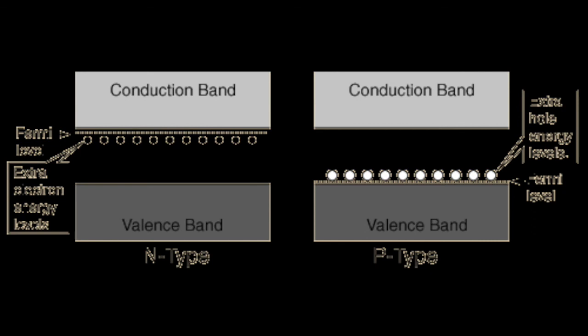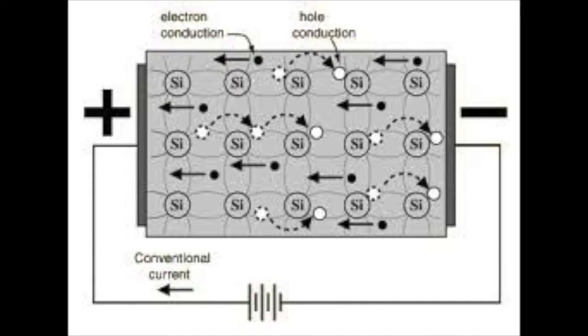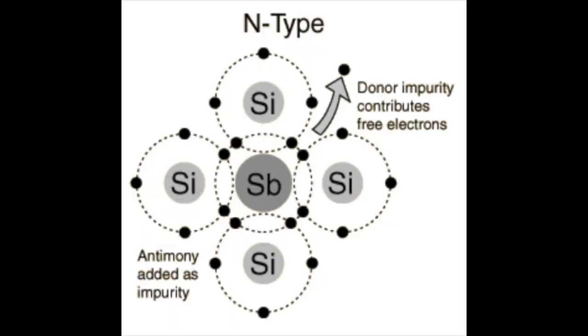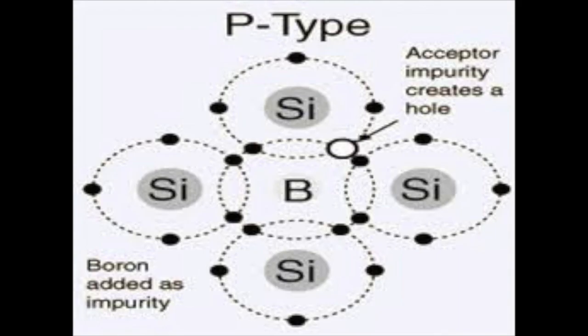After an electron moves across the band of conduction, a hole is left in its place for another electron to fill. This creates a flow of holes moving in one direction and electrons moving in the other direction. Depending on what elements are used during doping, the material becomes negative type or n-type, and positive type, p-type.